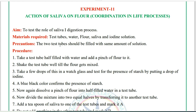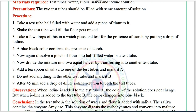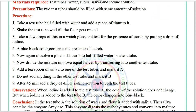Precaution: The two test tubes should be filled with the same amount of solution. Procedure: Take a test tube half filled with water and add a pinch of flour. Shake it well until the flour is mixed. Take a few drops in a watch glass and test for starch by adding a drop of iodine — a blue-black color confirms the presence of starch.